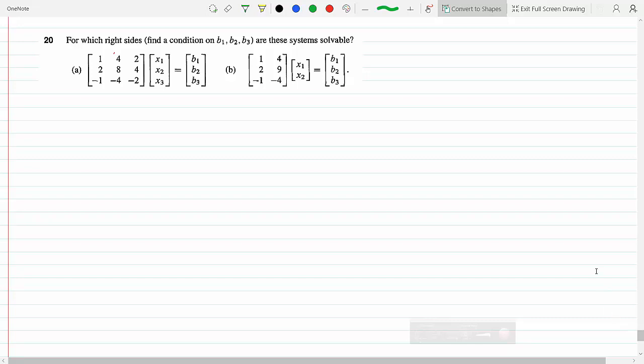For which right-sides find the condition on B1, B2, B3 are these systems solvable?